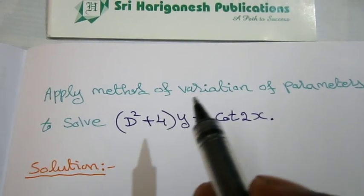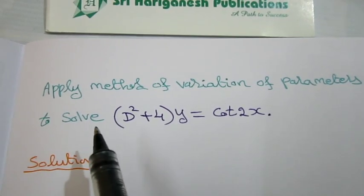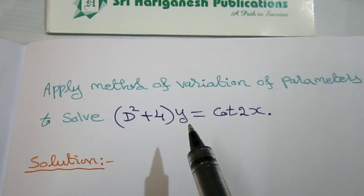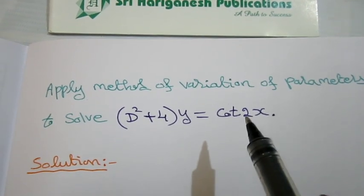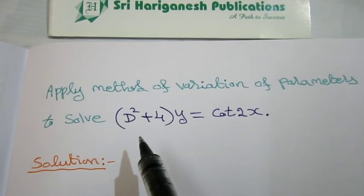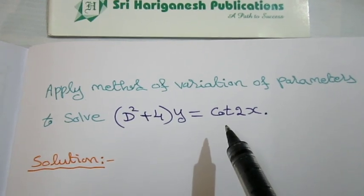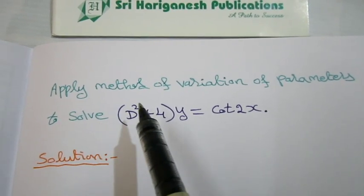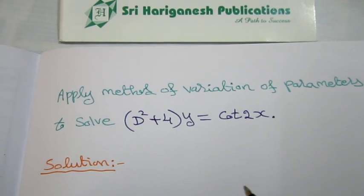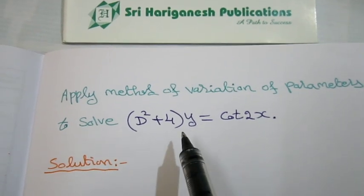Apply the method of variation of parameters to solve (D² + 4)y = cot 2x. To solve this differential equation we have to apply the method of variation of parameters to find the solution.